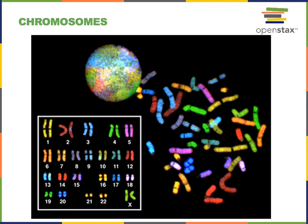Here we see a karyogram made from photos of chromosomes in a human cell. Humans are eukaryotes, meaning that we have cells containing organelles and our DNA is found on linear chromosomes, instead of circular chromosomes found in prokaryotic organisms like bacteria.